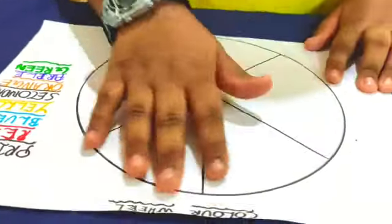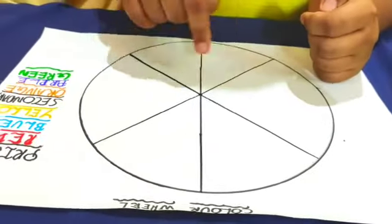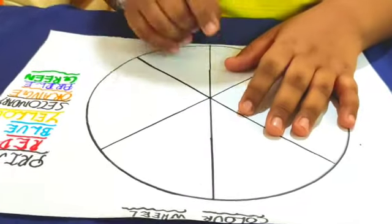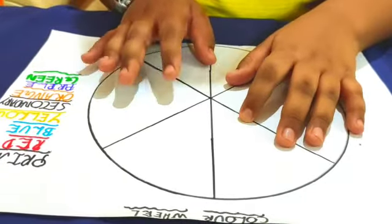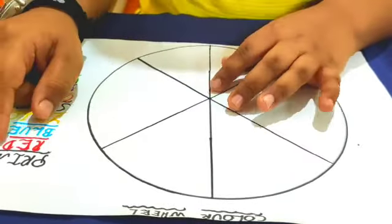So right now you can see my color wheel here. See, one, two, three, four, five, six. Now I am going to color it alternate. One for primary and one for secondary. So let us start with primary colors.